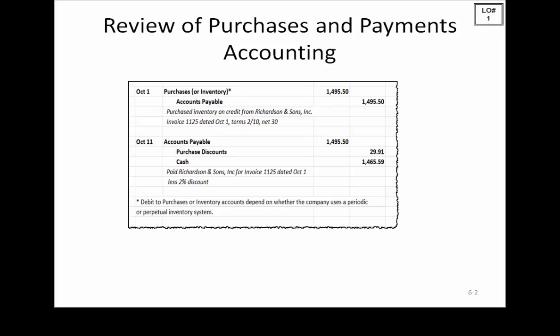On October 1st, we purchased inventory for $1,495.50 and recorded a corresponding accounts payable for $1,495.50. The terms were 2/10 net 30, so on October 11th we take advantage of the prompt payment discount, reducing accounts payable by debiting accounts payable for $1,495.50.